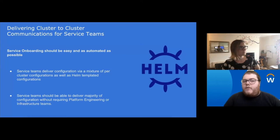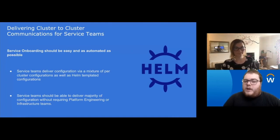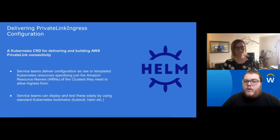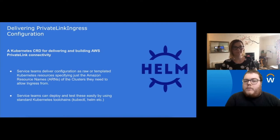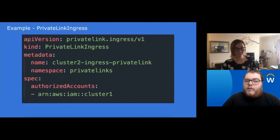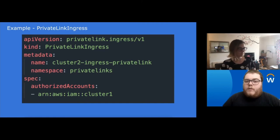One key goal was ensuring service onboarding is as easy and automated as possible, without requiring platform or infrastructure engineers every time. Teams use a mixture of Helm template configurations and per-environment configurations. To deliver a private link ingress configuration, service teams provide a raw Kubernetes resource specifying the AWS ARN of the account where the source cluster lives. In this example, you define a private link ingress named cluster-to-ingress-private-link in the private-links namespace, and in the authorized account section you provide the AWS ARN of the account where cluster 1 lives — allowing ingress from cluster 1 into cluster 2.